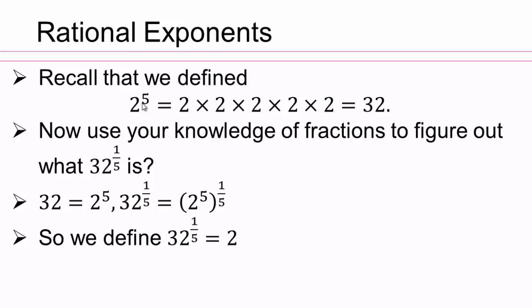You take this many twos. So now we want one fifth of 32, but 32 is made up of 5 twos. A fifth of them would be just 1 two.